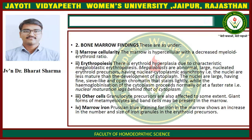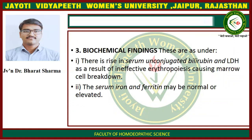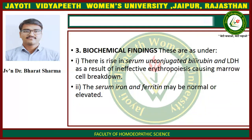Other Cells: Granulocyte precursor cells are also affected to some extent. Giant forms of metamyelocytes and band cells may be present in the marrow. Marrow Iron: Prussian blue staining for iron in the marrow shows an increase in the number and size of the iron granules in the erythroid precursors. Biochemical Findings: There is a rise in serum unconjugated bilirubin and LDH as a result of ineffective erythropoiesis causing marrow cell breakdown. The serum iron and ferritin may be normal or elevated.